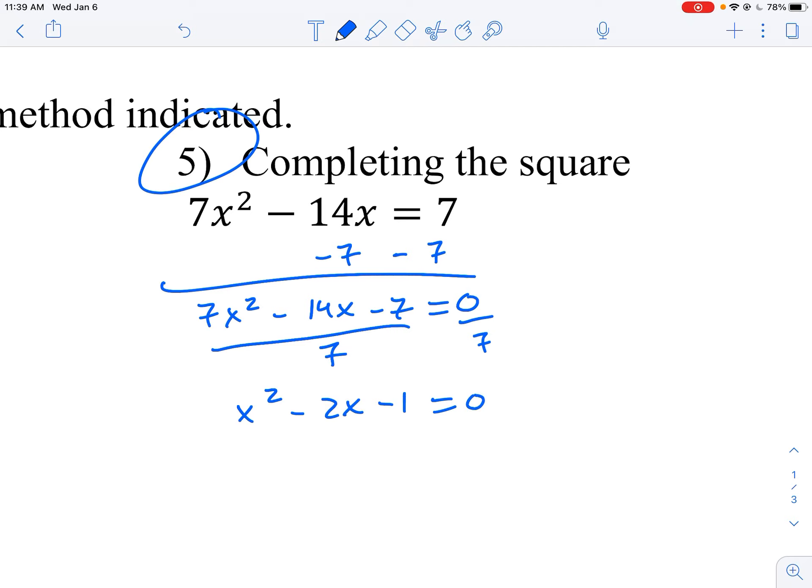And now we need to turn the left side into a perfect square trinomial. It almost is, but it's not. So what we're going to do is just get the x terms all by itself on one side. So I'm going to add 1 over here. And I get x² minus 2x equals 1. And I'm purposefully leaving a space here because I'm going to complete the square.